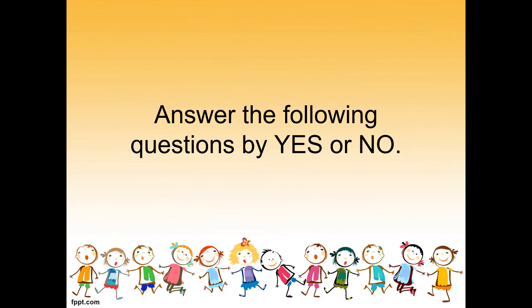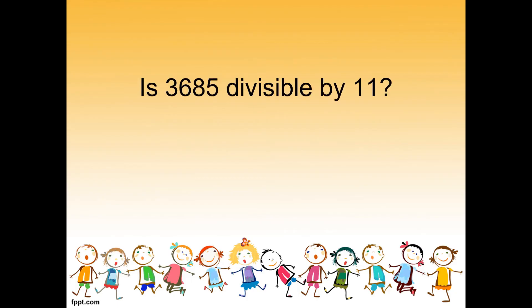Let us now answer practice questions. Question: is 3,685 divisible by 11? 3 minus 6 equals negative 3, plus 8 equals 5, minus 5 equals 0. Since the answer is 0, yes, 3,685 is divisible by 11.